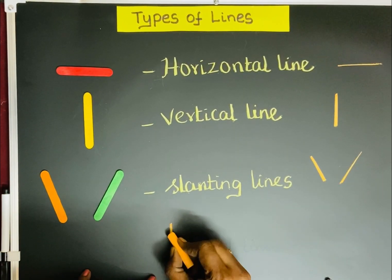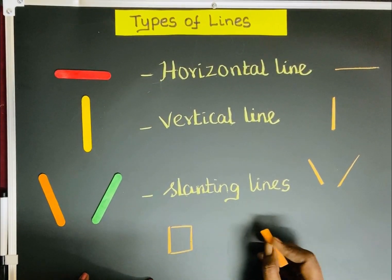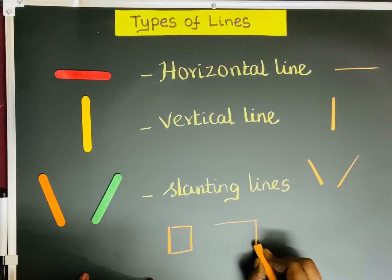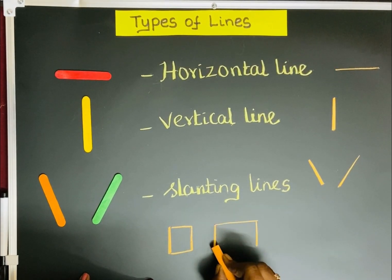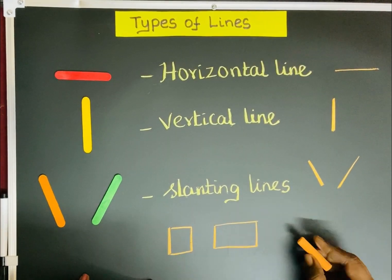Square. See, I'm using horizontal line and vertical line. Rectangle. Horizontal line, vertical line, again vertical line, vertical line.